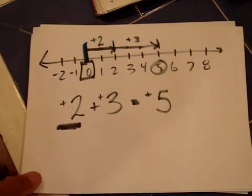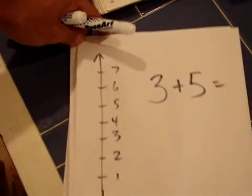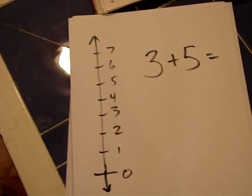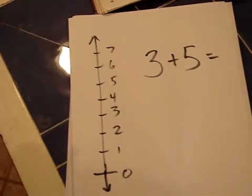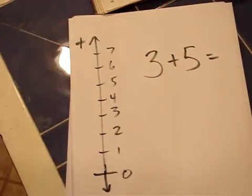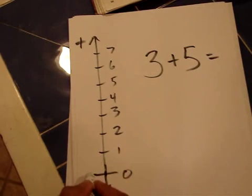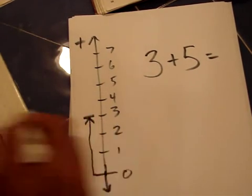Here's a left-to-right — or rather an up-and-down — number line, which is another way to think about it. On this vertical number line, positive numbers go up. Adding 3 and 5: I make 3 moves up — 1, 2, 3 — then 5 more moves up.